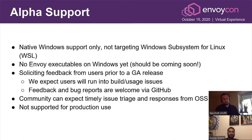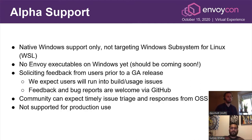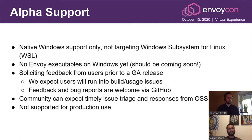So now that we're here, we have alpha for Windows. What does that actually mean? Envoy is natively supported on Windows — not targeting some Windows Subsystem for Linux, but running on Windows itself. There are no Envoy executables on Windows yet; we're working on that. Currently, users need to build the project from master. The alpha also means we're still soliciting feedback — we expect users will run into build or usage issues, and we'll be triaging GitHub frequently. That said, there's no formal agreement that this will be supported for production usage in its current alpha state.